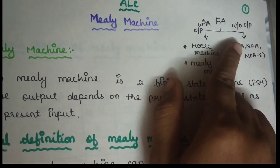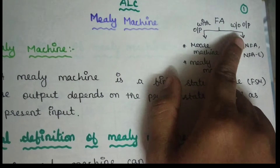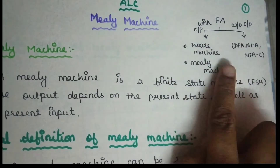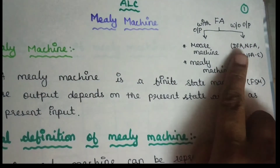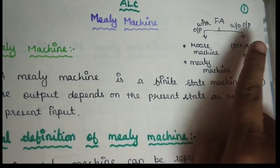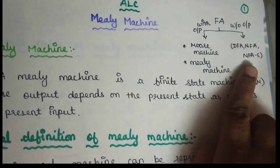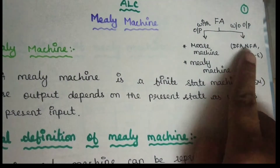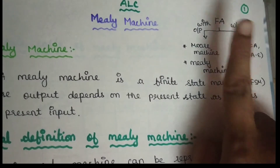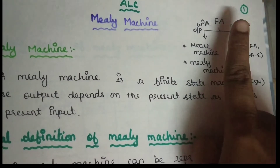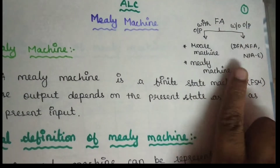We have finite automata with output and without output. For without output, let's talk about NFA, DFA, and NFA with epsilon.